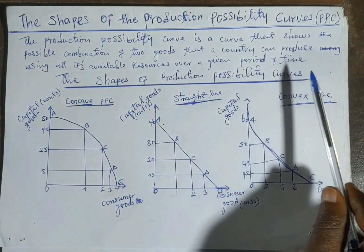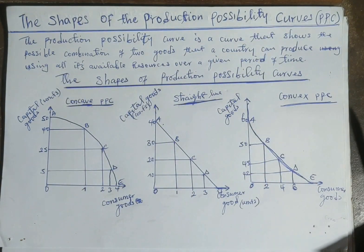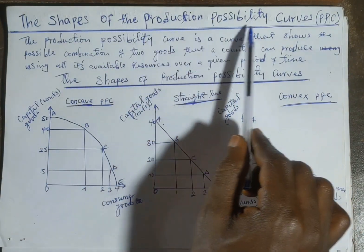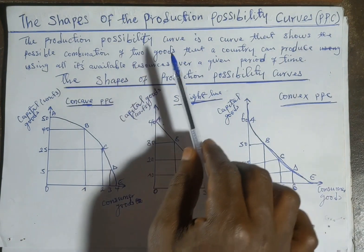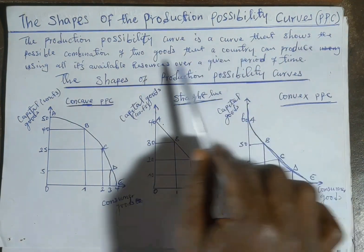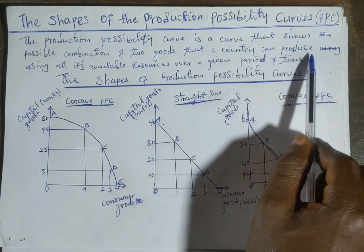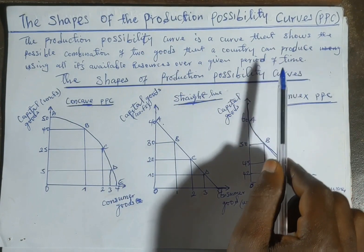Welcome to another session of Sam's Economist Tutorials. In today's presentation, we are going to be discussing the various shapes of the PPC — the production possibility curve, which is also called the production possibility frontier. The production possibility frontier is defined as a curve that shows the possible combination of two goods that a country can produce using all its available resources over a given period of time.